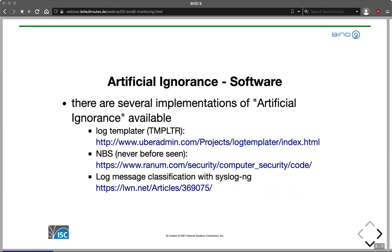There are multiple implementations of artificial ignorance. I link to two instruction pages with tutorials on how to compile, install, and use these tools. The first is called Log Templator. The second is NBS — Never Before Seen — from Marcus Ranum. There's also an article on Linux Weekly News: 'How to Use Artificial Ignorance with Syslog-NG.' You can also apply the concept to other systems like Logstash, Elasticsearch, Splunk, or in the simplest case, use grep with regular expressions, though that involves a lot of manual work.